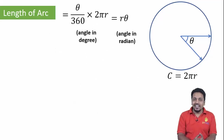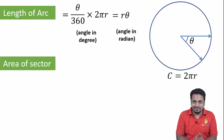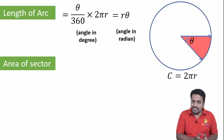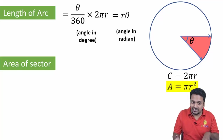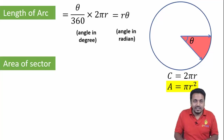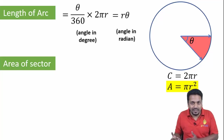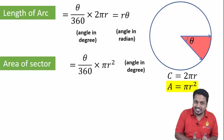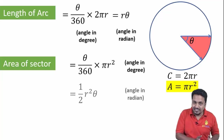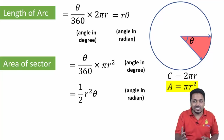Now let's see the area of a sector. This red one is a sector with central angle theta. The area of a sector is Pi r squared when the angle at the center is 360 degrees, meaning the sector is a full circle. So when the central angle is theta, the area of sector will be theta upon 360 times Pi r squared — unitary method again. If theta is given in radians, then the area is one-half r squared theta.